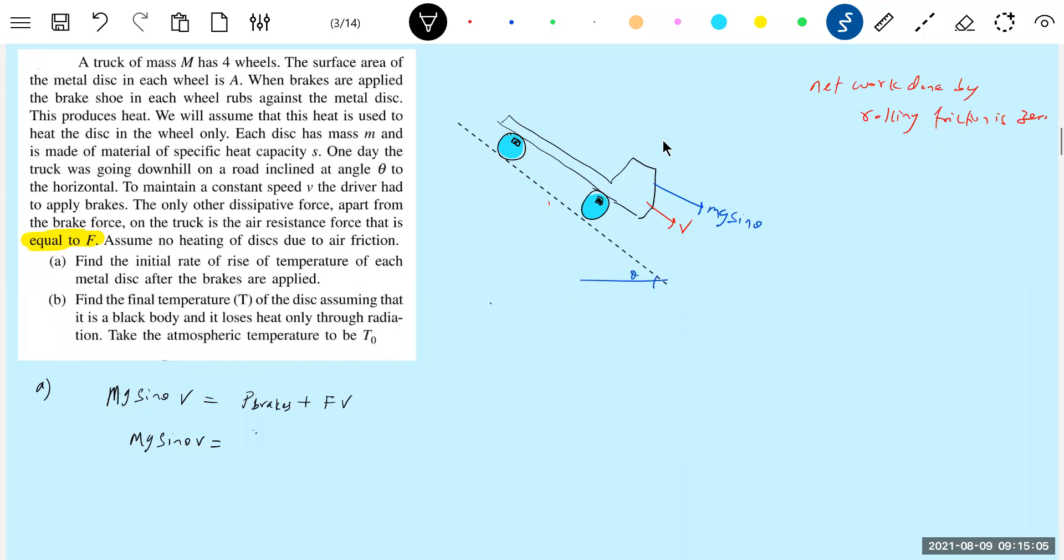Power lost means altogether four wheels be there. Four into mass of each wheel, specific heat capacity we are going to be, he has given s, then dT by dt. Find the initial rate of rise of temperature. Small m it should be. Why four? Four wheels are there, so we have to just solve: mg sin theta minus F V equal to this.